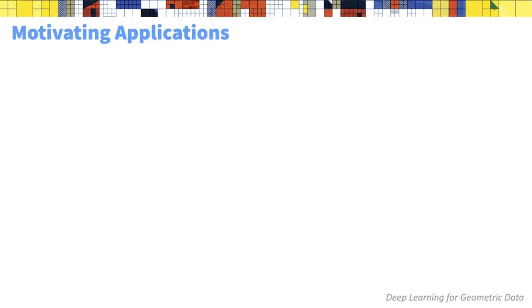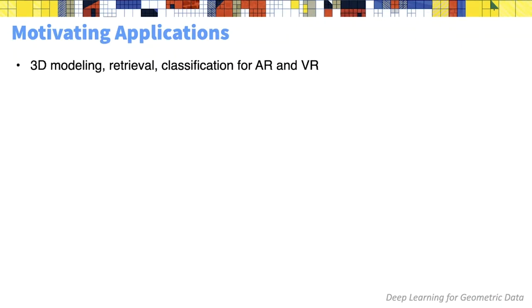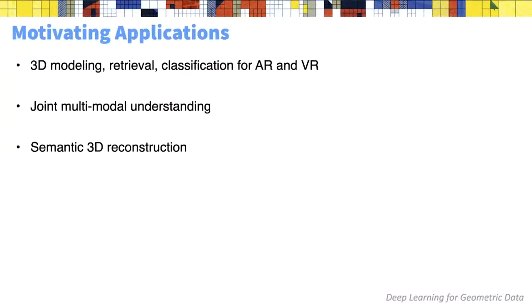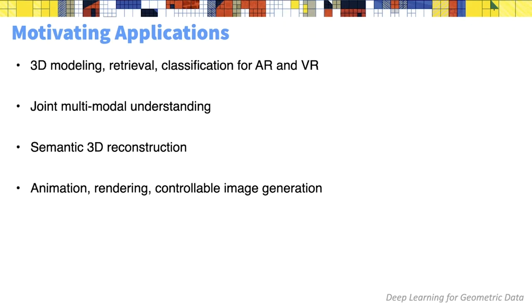Since this is SGP and we are all interested in geometry processing, let's quickly look at the typical types of applications we are interested in. We are interested in modeling for AR and VR applications, jointly processing images, scans, and meshes — commonly referred to as multimodal data analysis — semantic 3D reconstruction and analysis, and more broadly creating content in the case of animation, rendering, and image generation.